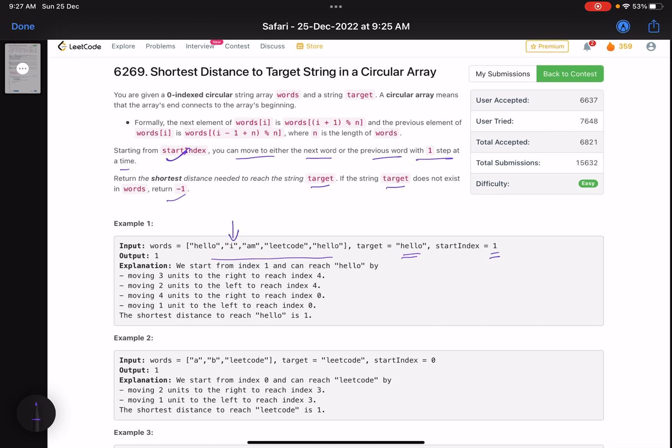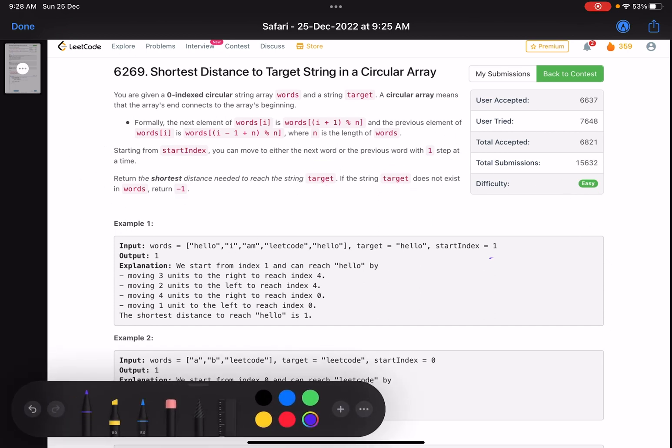At every step I can move forward or backwards. Everything is connected. We can start from index one and find where hello is. We can take three steps to reach it, or we can move in the other direction - one step, two steps. There can be at most two options to move to a particular word.